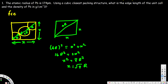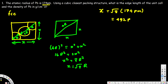The question asks for the edge length of the unit cell. They have given the radius as 174 picometers, so we know the r value. The edge length x = √8 × r. Plugging in 174 picometers for r, multiplying √8 by 174 gives us 492 picometers. So the edge length is 492 picometers.